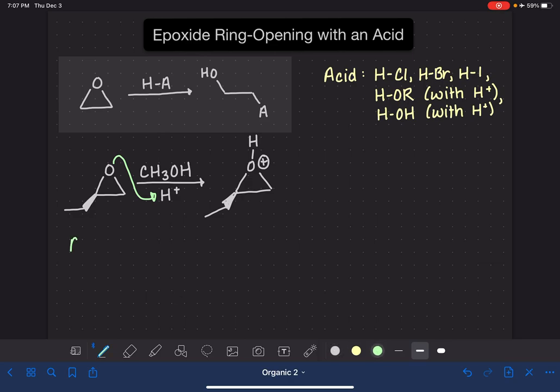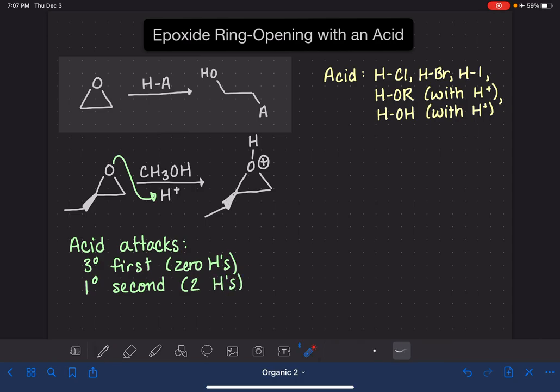So in terms of attacking, the acid attacks in the ring a tertiary carbon first. If there is a tertiary carbon in this ring, that's the carbon that is going to get attacked. That would be a tertiary carbon would be one that has zero hydrogens on it. We do not have a tertiary carbon. We have two hydrogens on one of our carbons and one hydrogen on the other. And so that means that our acid is not going to attack this guy. If there isn't a tertiary carbon to attack, then it attacks a primary carbon. So its second choice would be a primary carbon. And this is one that has two hydrogens. We have a primary carbon, this guy right here. So that's where we're going to be doing our attacking.